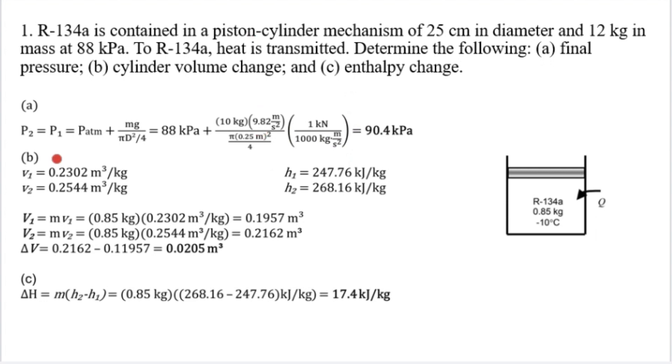Next is B. You need to find the cylinder volume change. V1 equals 0.2302 m³ per kg, V2 is 0.2544 m³ per kg. Next is H1, height equals 247.76 kJ per kg. H2 is 268.16 kJ per kg.